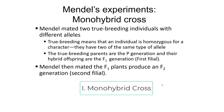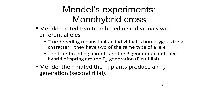Let's look at monohybrid crosses. This is where you take two true breeding individuals that have different alleles. True breeding means the individual is homozygous per character — two parents gave them two of the same type of allele. The true breeding parents are what's known as the P generation, and their hybrid offspring are the first filial generation, or F1s.